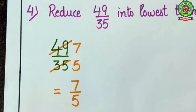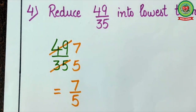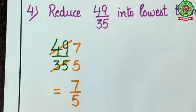So students, today we have discussed how to find the missing numerator or denominator in equivalent fractions. We have also discussed how to reduce a fraction into its lowest term. I hope with the help of this video you will all be able to solve the related sums given in your SNAP homework. Thank you. Have a nice day.